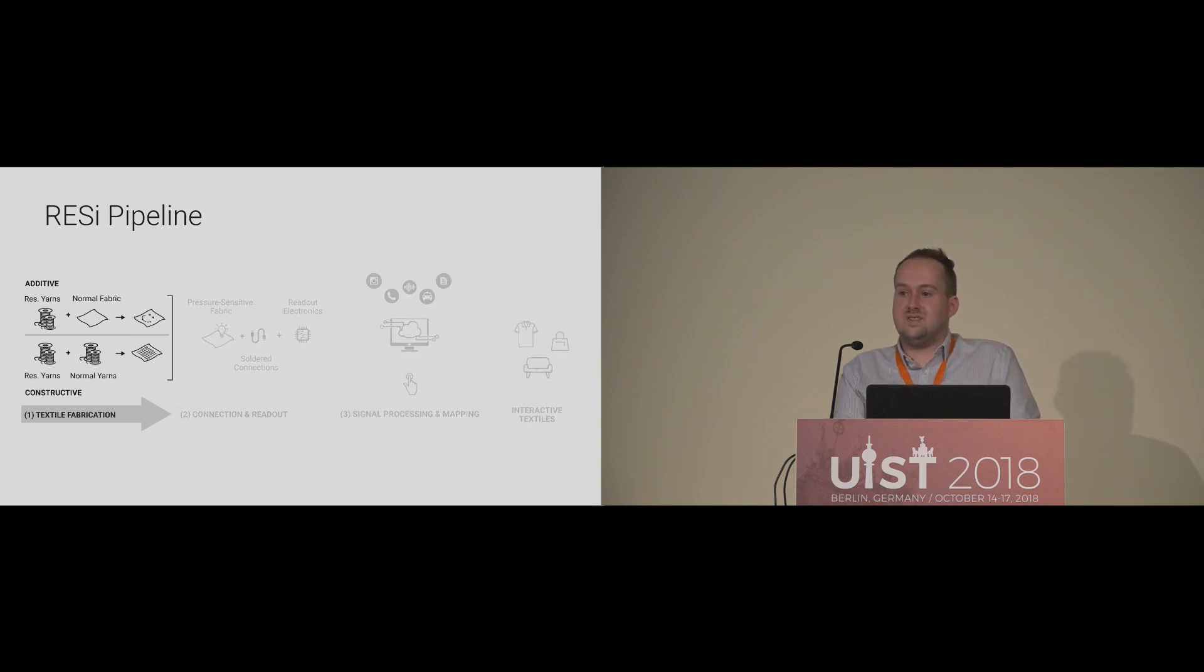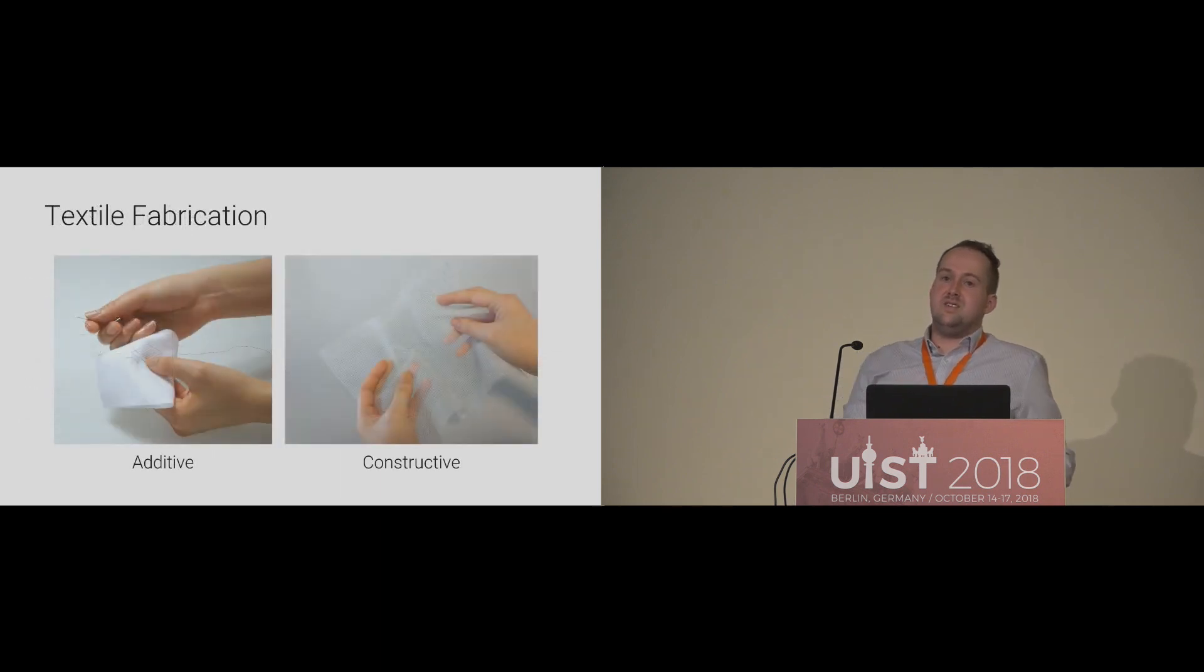Let's start with the textile fabrication. We divided the textile manufacturing techniques into additive and constructive methods. Additive methods, such as sewing, machine sewing, or embroidery, can be used to enhance existing textiles with interactive capabilities.